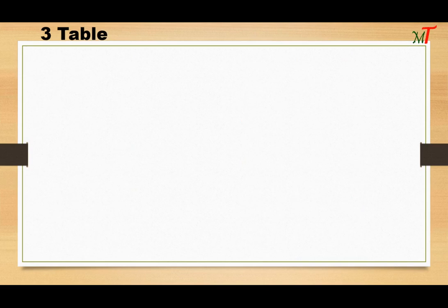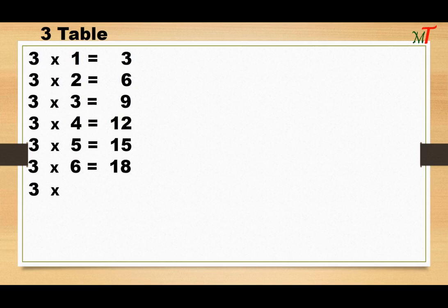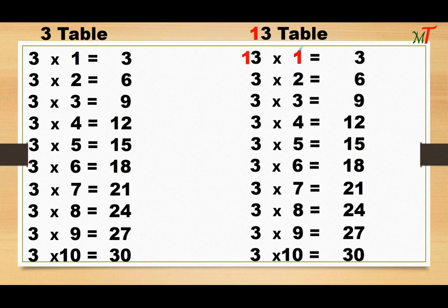Third table: 3 1s are 3, 3 2s are 6, 3 3s are 9, 3 4s are 12, 3 5s are 15, 3 6s are 18, 3 7s are 21, 3 8s are 24, 3 9s are 27, 3 10s are 30. Now using this third table, we are going to write the 13th table.